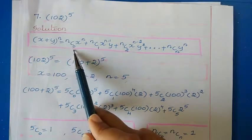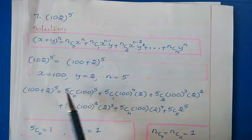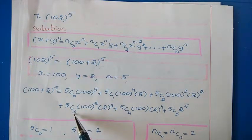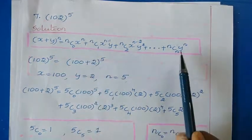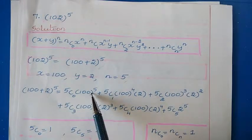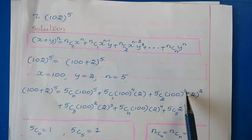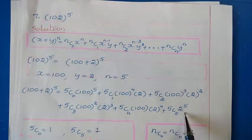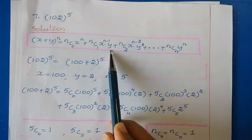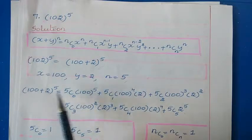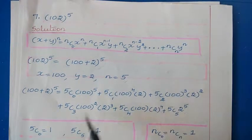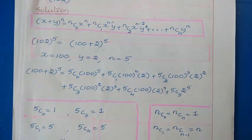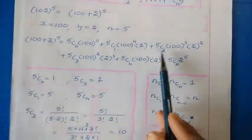We start from 5c0 up to 5c5. The first variable 100 has decreasing powers from 5 to 0: 100 to the power 5, 4, 3, 2, 1, and 0. The second variable 2 has increasing powers: 2 to the power 0 through 2 to the power 5. Now we find the combination values. Using nc0 equals ncn equals 1: 5c0 equals 1 and 5c5 equals 1. Using nc1 equals n: 5c1 equals 5 and 5c4 equals 5.